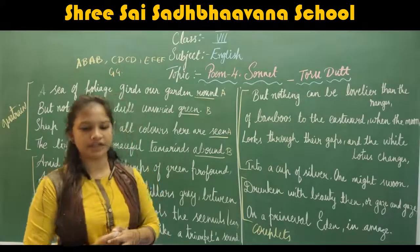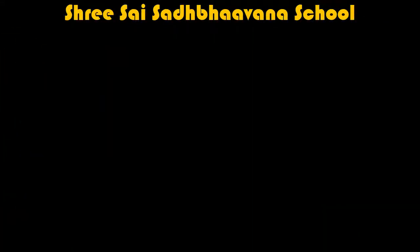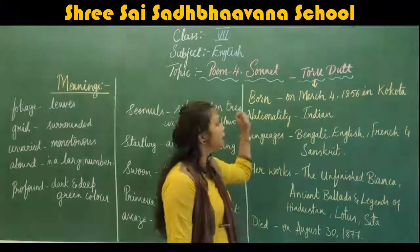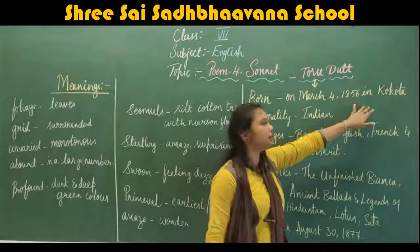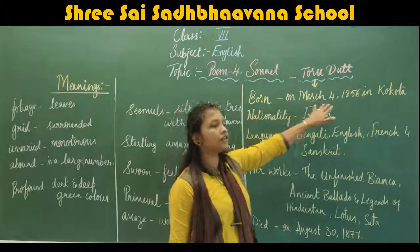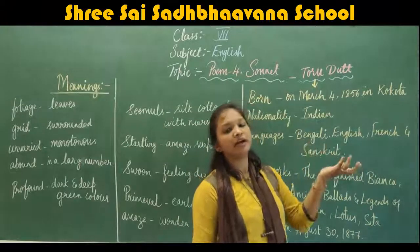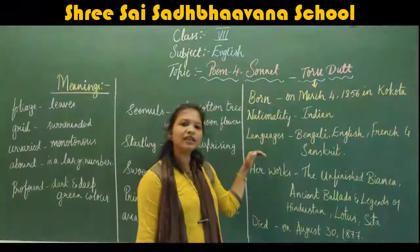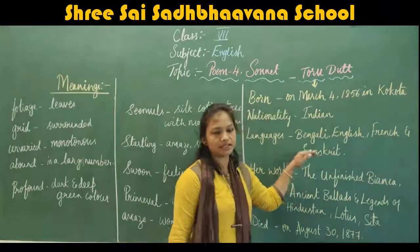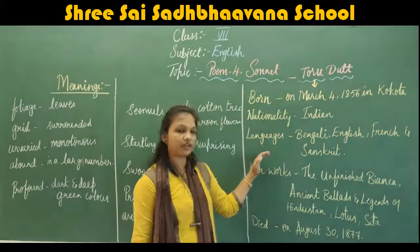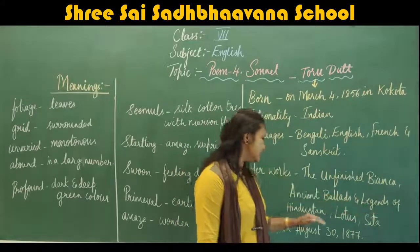Now let's learn about the poet. The poet's name is Toru Dutt. She was born on March 4th, 1856, in Kolkata. Her nationality was Indian, and her family later converted to Christianity. She wrote in Bengali, English, and French, and also translated works into these languages.